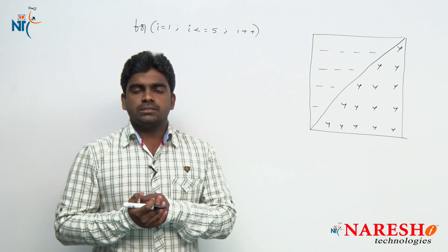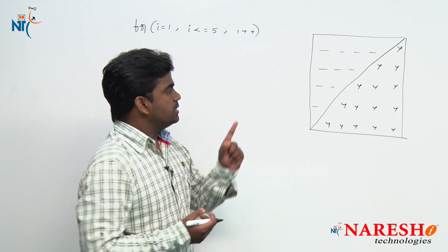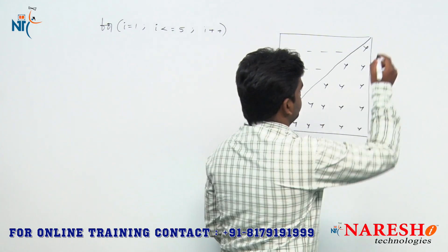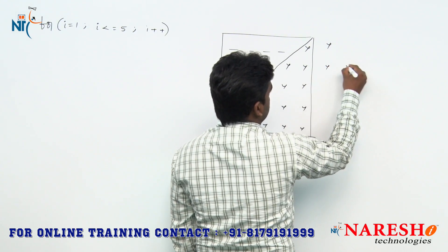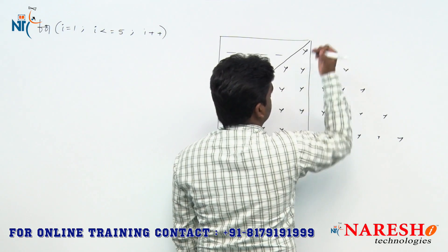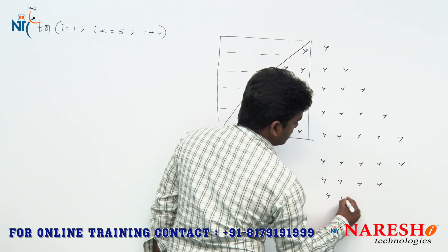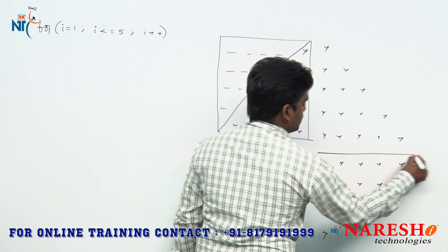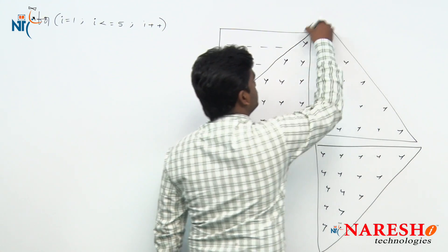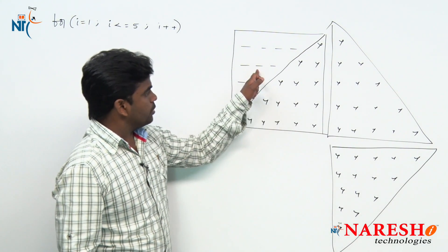In the previous sessions we discussed how to print some of the patterns. The patterns we discussed: 1 star, 2 stars, 3, 4, 5 — that is one pattern. And the next one: 5 stars, 4 stars, 3, 2, 1 — that is another pattern. Both are already completed. Based on these two patterns, we can write the logic of this new pattern easily.